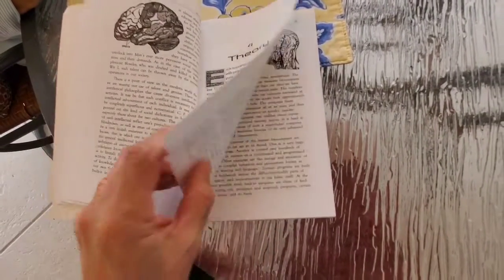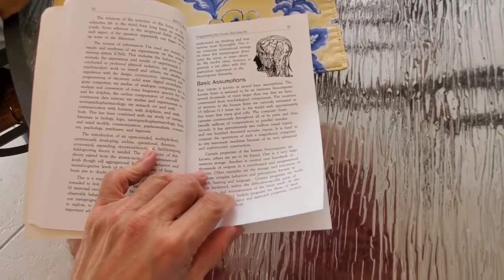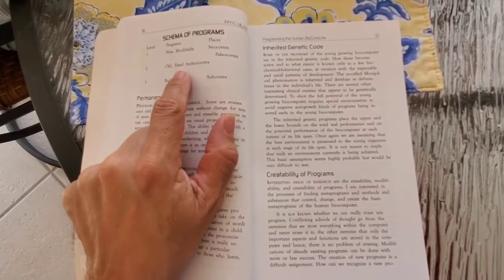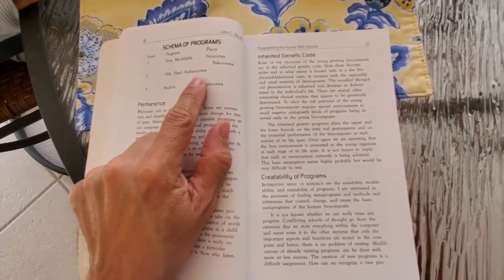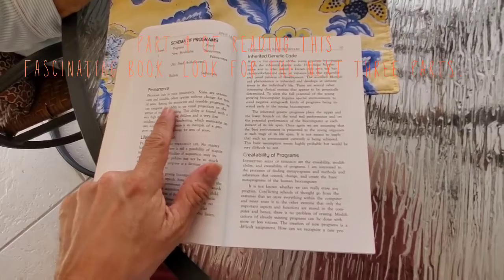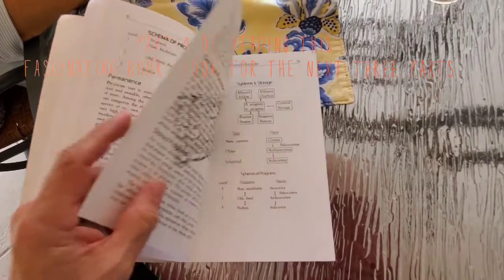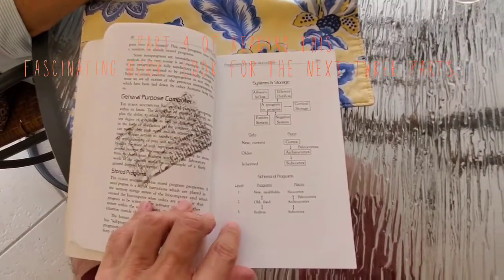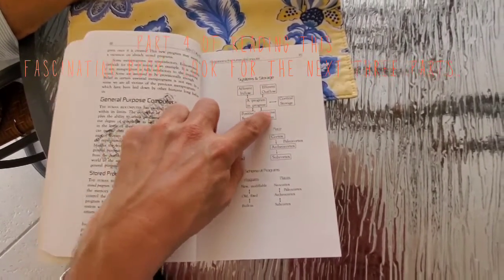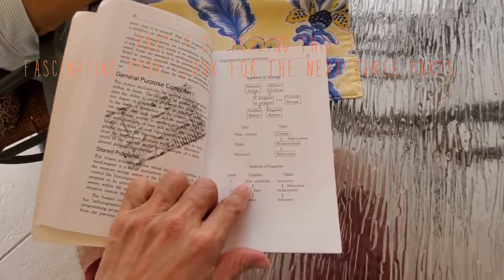Each mammalian brain functions as a computer. Basic assumptions. Schema of programs levels: three levels programs - new modifiable, old fixed based, built-in. Places: neocortex, paleocortex, subcortex. Performance: lifelong, acquisition, inherited genetic code. Creatability of programs, general purpose computer, stored programs system and storage, afferent inflow, efferent outflow of program in progress, positive system, negative system, cortical storage data new, current, older, inherited place schema of programs.